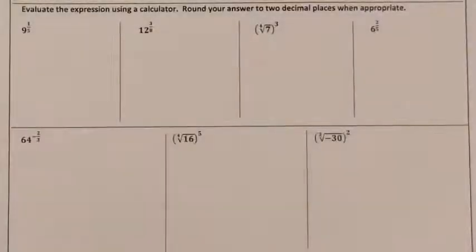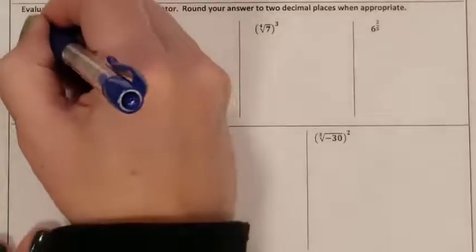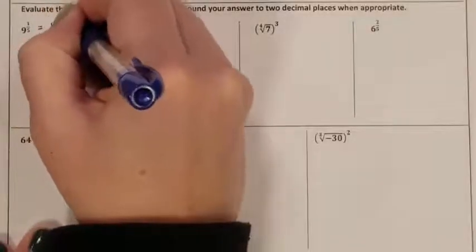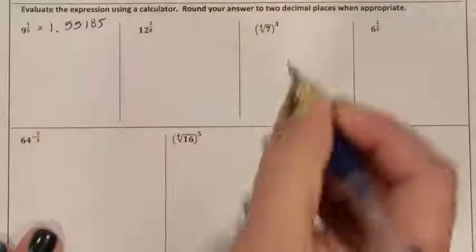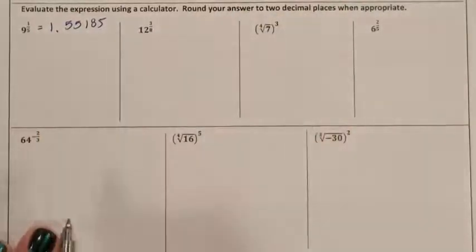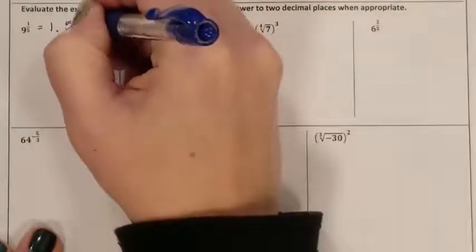So this is the decimal answer that I'm supposed to put down: 1.55185. Except it told me to round it to two decimal places, which means I'm supposed to cut it off right here.